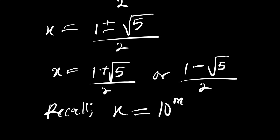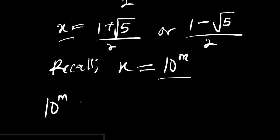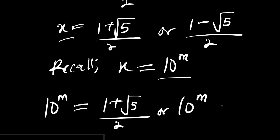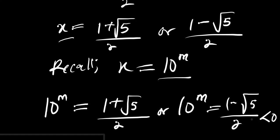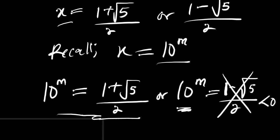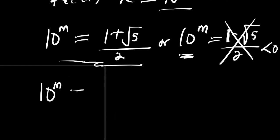Recall that we set x equal to 10 power m, so we substitute back: 10 power m equals 1 plus root 5 divided by 2, or 10 power m equals 1 minus root 5 divided by 2. But 1 minus root 5 divided by 2 gives a number less than 0 because root 5 is greater than 1, and 10 power m cannot equal a negative number. So we discard that solution and only consider 10 power m equals 1 plus root 5 divided by 2.